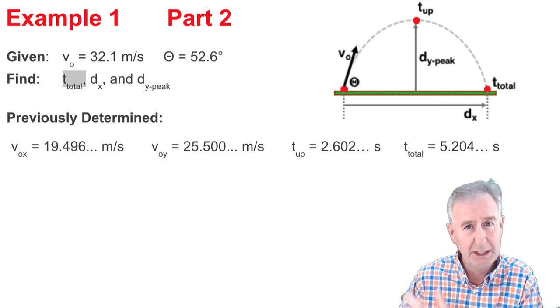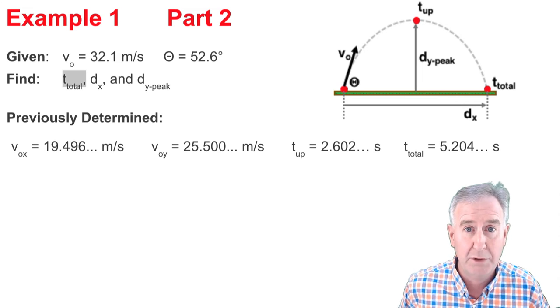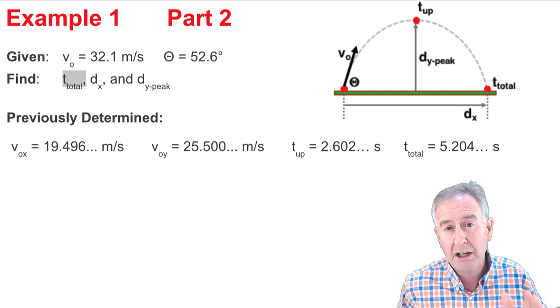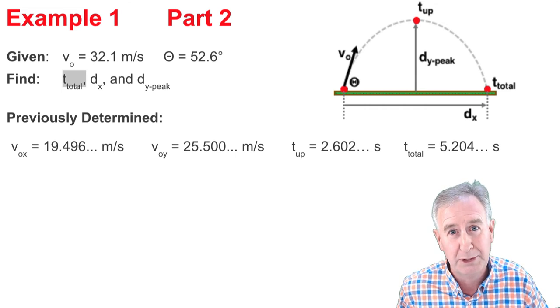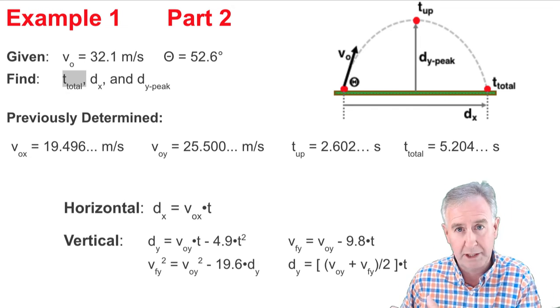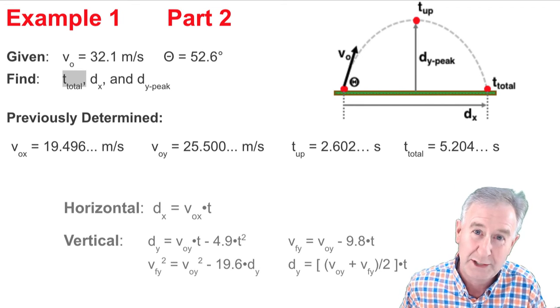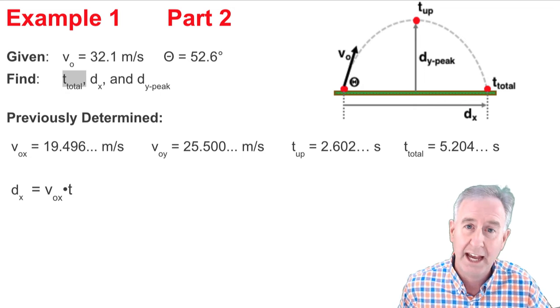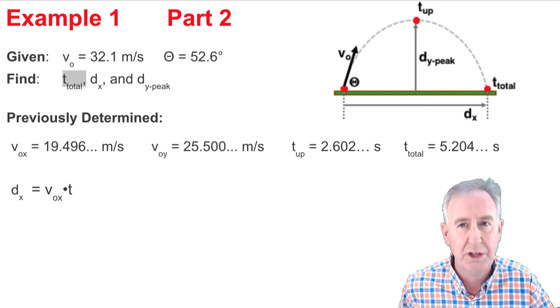But I also have to get DX and DY at the peak. Let's start with DX. If you notice the diagram I've drawn above me, we're talking about the horizontal displacement when the time is the total time, that is when the time is 5.204 seconds. And here's my formulas. And I want a horizontal formula because I'm finding DX. There's only one to choose from, so it makes the choice easy. I write it down DX equals VOX times T. Then I look for the value of VOX. I've calculated that already.